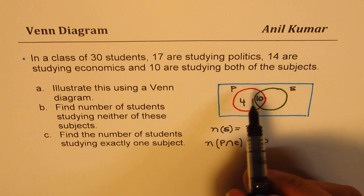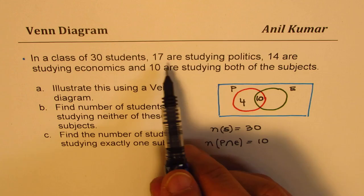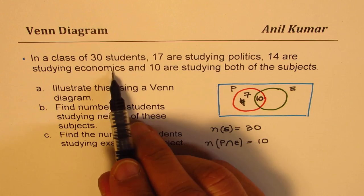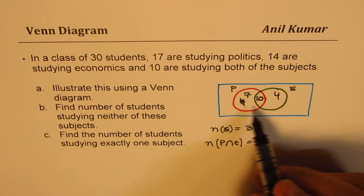So 10 of these are doing both the subjects. 17 are studying, sorry, sorry. I read it wrong. 17 are studying politics. So this will be politics would be 7. 17 are studying politics, 14 are studying economics. So 4 will come on economics. Is that clear to you? So that is how you are going to show the information on a Venn diagram.